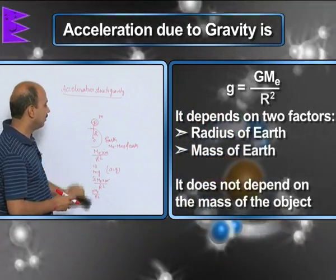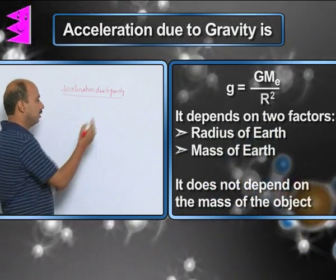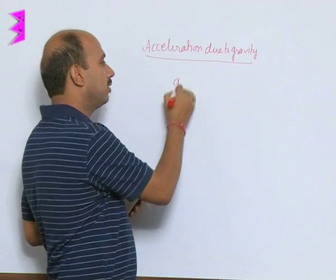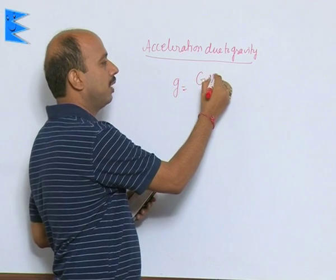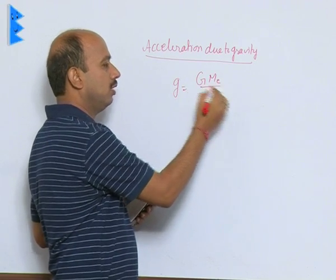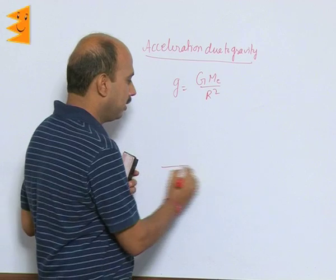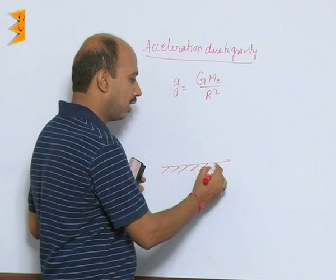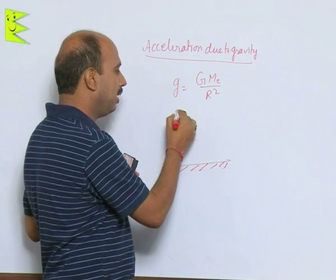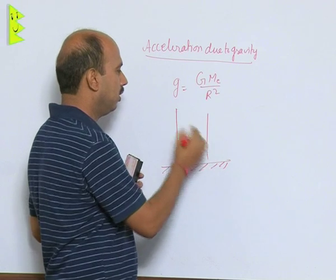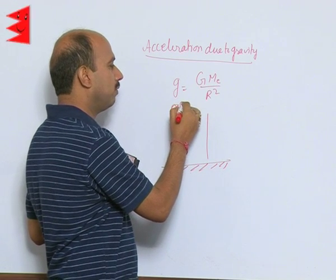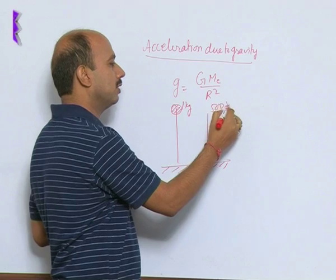It means, if you have taken, so just I will write the formula for acceleration due to gravity first, g equals G Mₑ upon R square. Now if you have taken suppose like here, this is the ground and from the same height here, you take one object of 1 kg, another object of 500 kg.